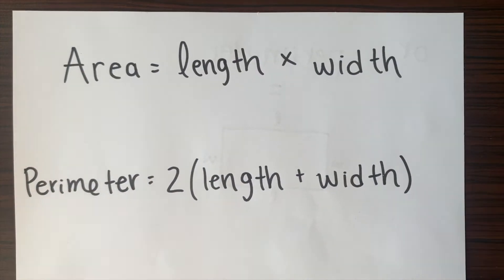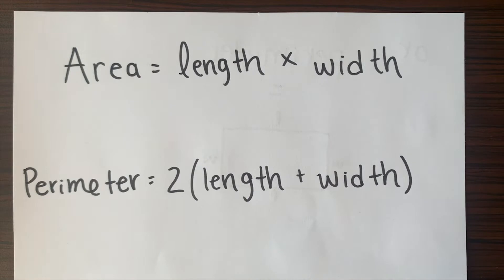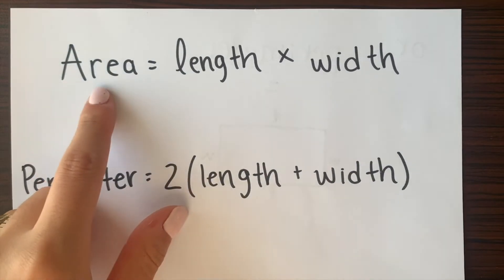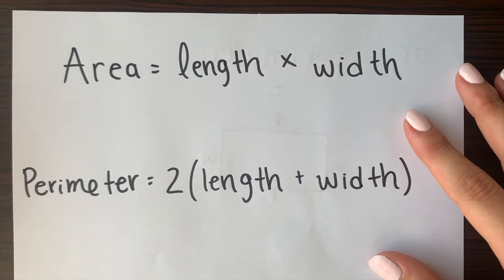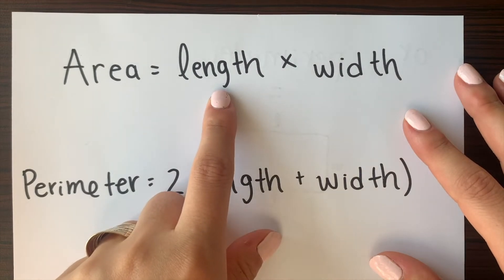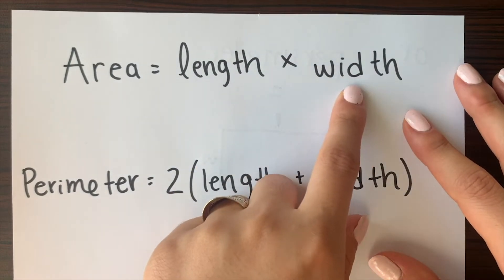To get started with this activity I'm going to go over the two equations that we're going to be using in order to find the area and perimeter of rectangles. So to find the area what we're going to have to do is multiply the value that we are given for the length and the value that we're given for the width.